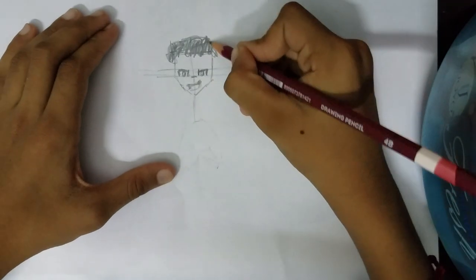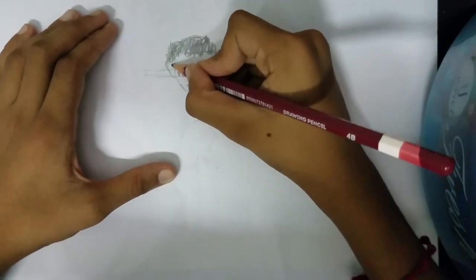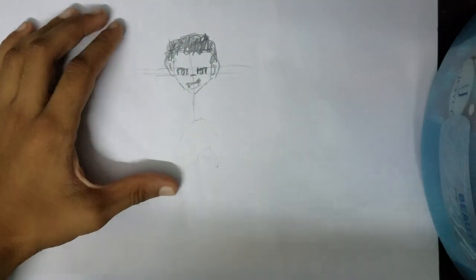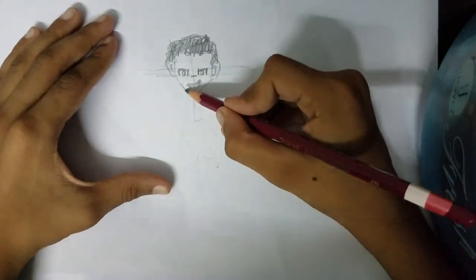But don't scribble everywhere like me, because I'm a naughty boy. Anyways, okay, just draw a jade. That makes the ears look like an anime. Next, the neck.